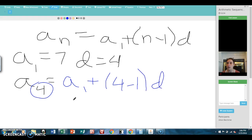Now we'll fill in the given numbers. So A1 was 7, 4 minus 1 is 3, the common difference is 4, and so now we can add up 7 plus 12, so my answer is 19.